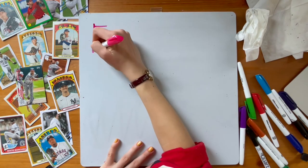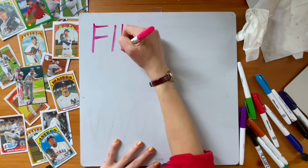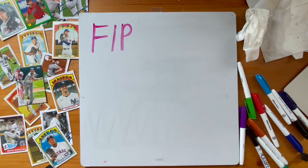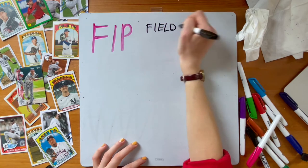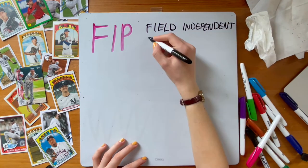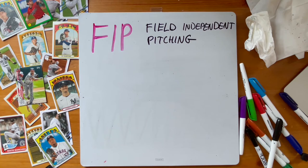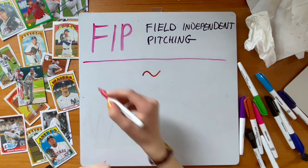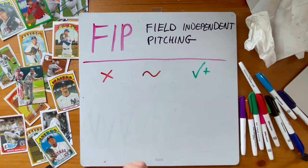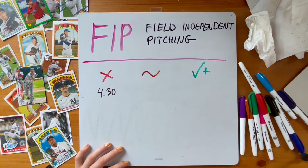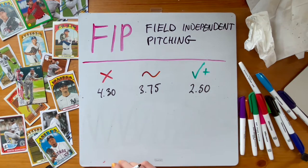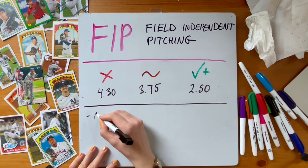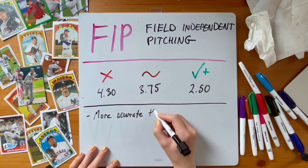FIP, or Field Independent Pitching, is one of these stats that better answers the question of how many runs a pitcher gave up that were his fault. It only factors in the events a pitcher has the most control over: strikeouts, unintentional walks, hit by pitches, and home runs. It entirely removes the results of balls hit into the field of play, instead of just removing runs scored on errors. You read it like ERA so the scale is the same. Think of FIP as a more accurate ERA.